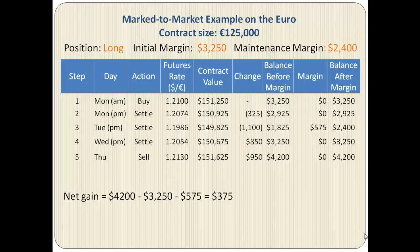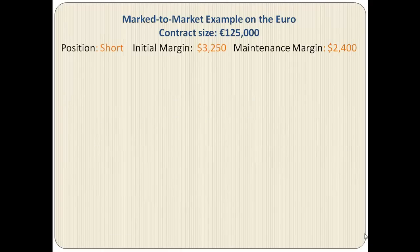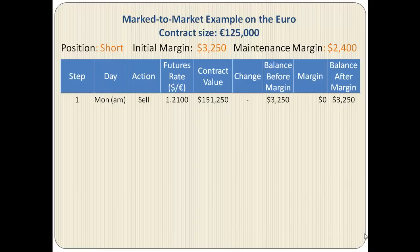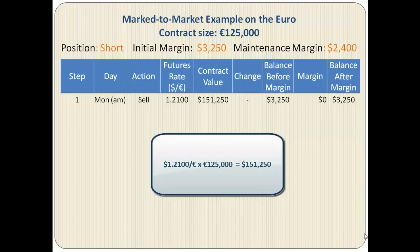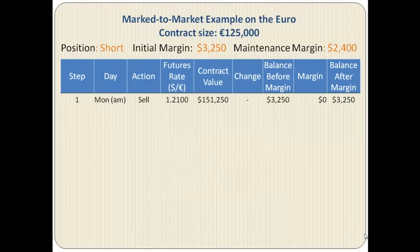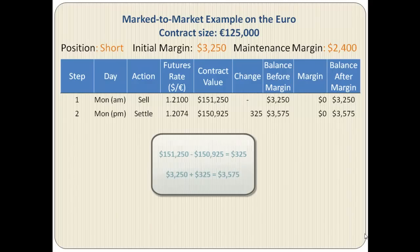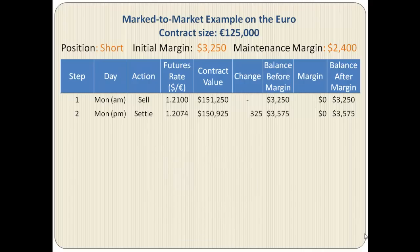Now let's see what happens to the position of the seller. The seller took a short position. The initial margin is the same, $3,250, and the maintenance margin is also the same, $2,400. On Monday morning the speculator took a short position, or sold the contract, expecting the euro to decline in value. The value of the contract is $151,250 and the balance is $3,250. At closing on Monday the euro indeed drops in value, which means the speculator has gained $325, which is added to the speculator's account and the account goes up to $3,575.